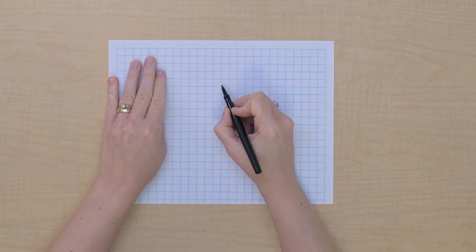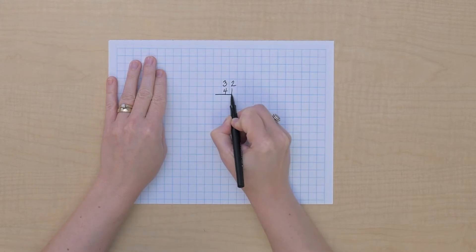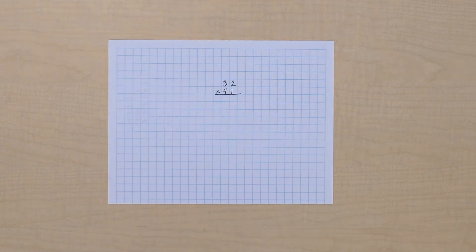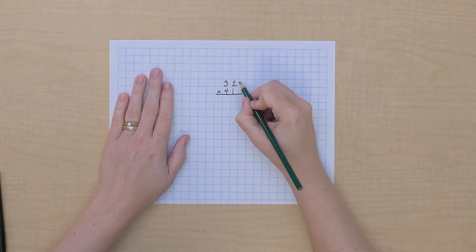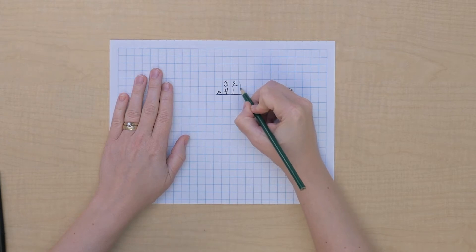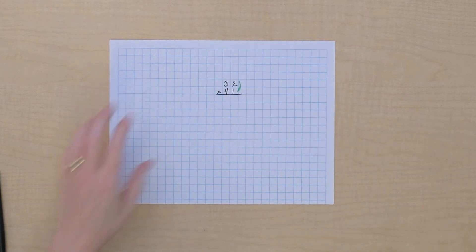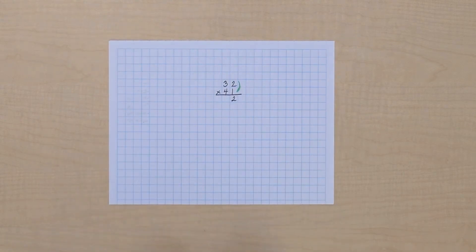Let's do 32 times 41. So let's take a look at our units. We know that's a multiplication we need to do, and it's the only units multiplication. So I'm going to connect them with this little arc, just so we can see. We've got units times units, which is two times one, which gives us two, and we can write that down because we know it's the only units multiplication.